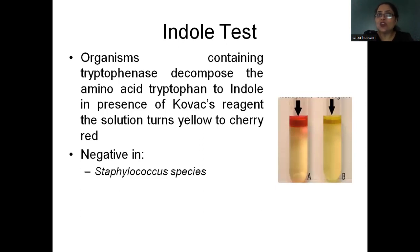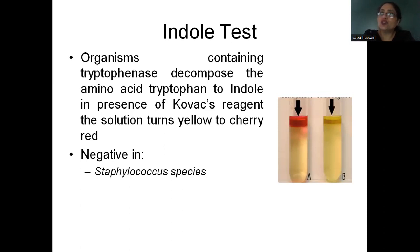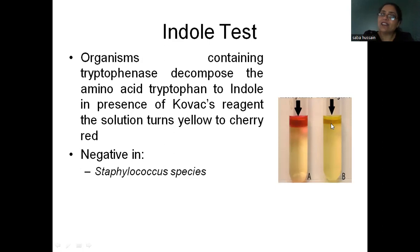Coming to the last test in this battery — the indole test. This is for organisms containing tryptophanase enzyme. Tryptophanase decomposes the amino acid tryptophan to indole; in the presence of Kovac's reagent the solution turns from yellow to cherry red. The media should contain tryptophan for tryptophanase-containing organisms to act on it and produce the cherry red color. The indole test is negative in all three species we were considering.